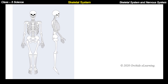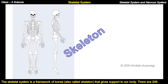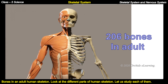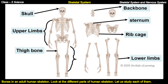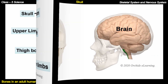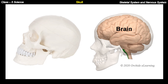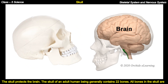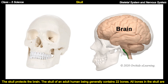Skeletal system. The skeletal system is a framework of bones, also called skeleton, that gives support to our body. There are 206 bones in an adult human skeleton. Let us study the different parts of the human skeleton. Skull: the skull protects the brain. The skull of an adult human being generally contains 22 bones.